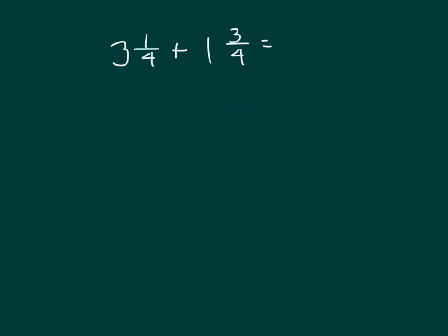Here we have another problem: three and one fourth plus one and three fourths. If we decompose each of these mixed numbers into their wholes and fractional parts, three and one fourth becomes three along with one fourth, and one and three fourths becomes one along with three fourths. So three and one fourth plus one and three fourths equals three plus one fourth plus one plus three fourths.